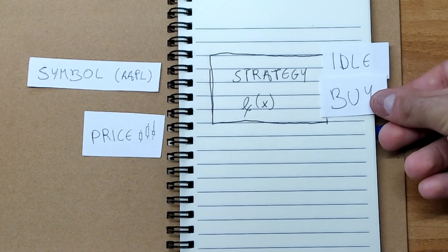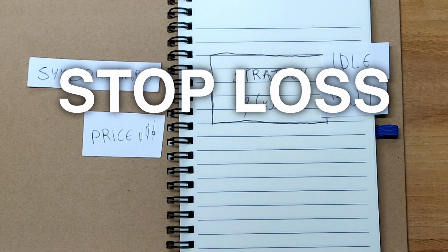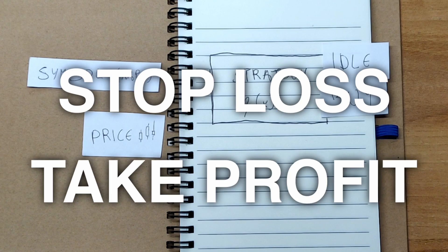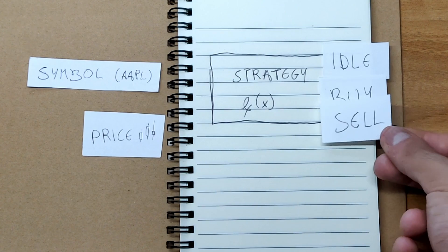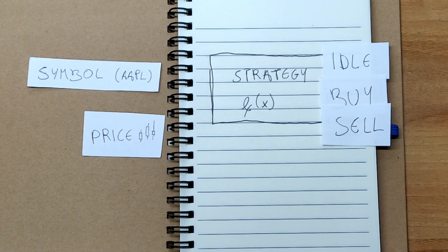Buy — we will buy a certain amount of the asset at a specific price, and we will add stop loss and take profit levels to close the operation. Or sell, which is exactly like the buy operation, but the opposite.